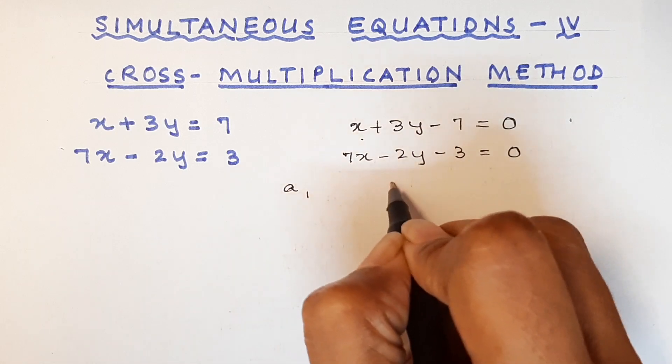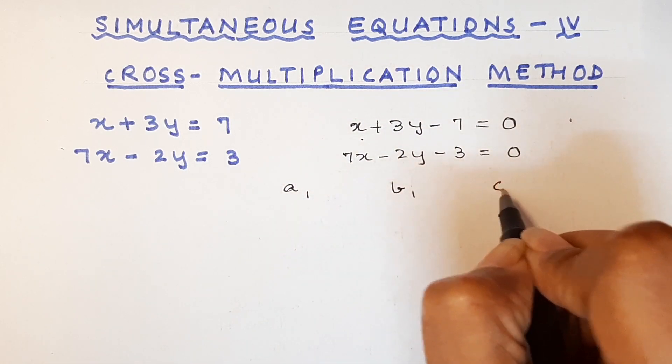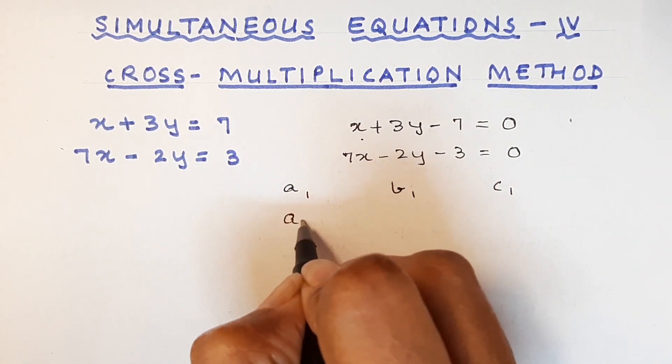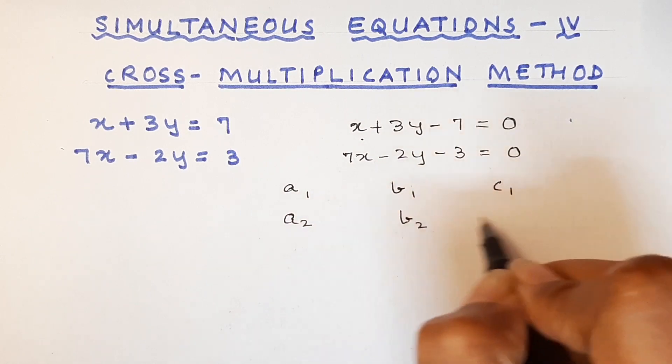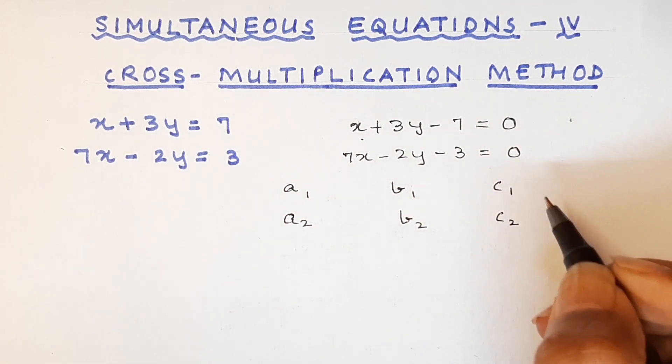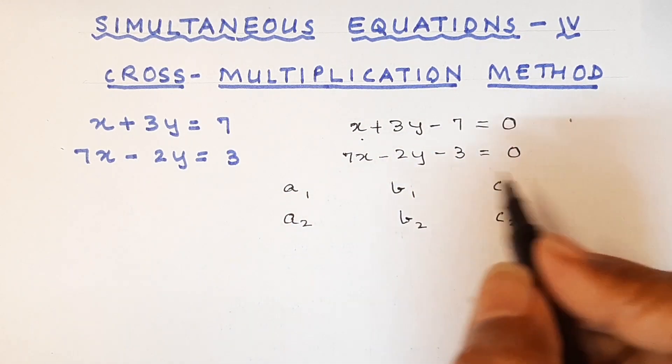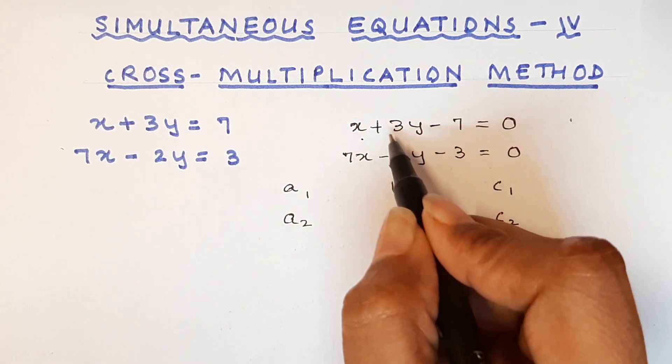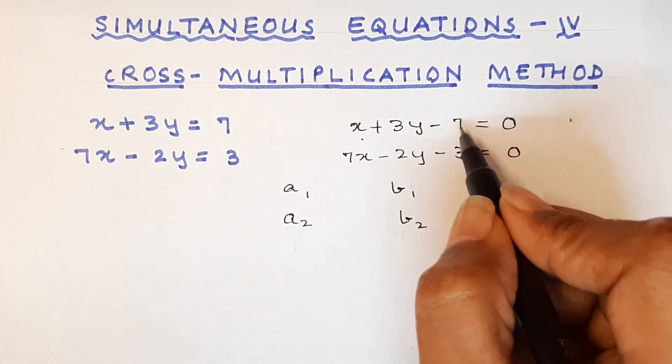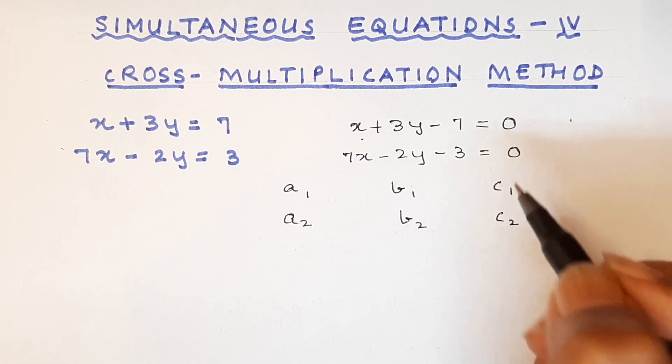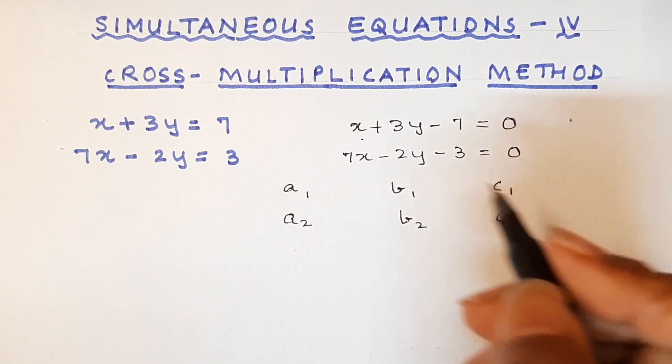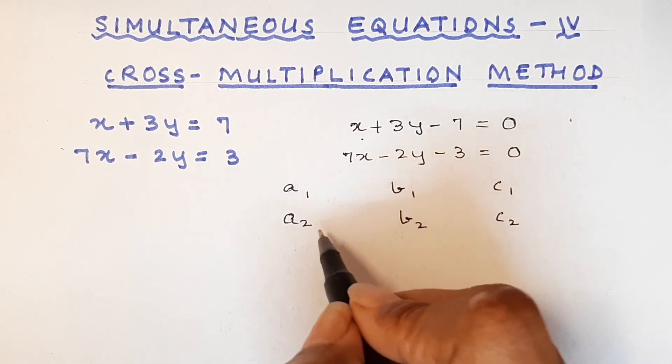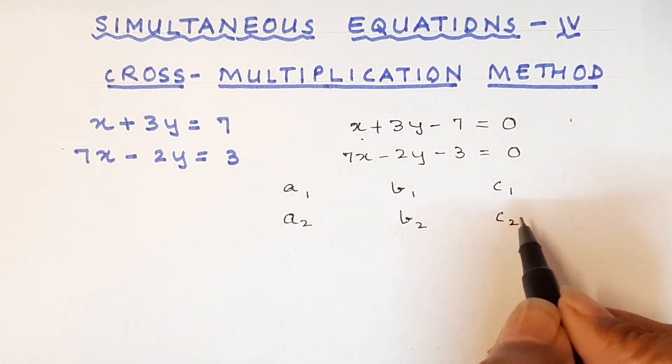Now what we have to do is write the values of a1, b1 and c1, a2, b2 and c2. What are a, b and c? a is the coefficient of x, b is the coefficient of y and c is the constant term. So for the first equation it will be a1, b1, c1. For the second equation it will be a2, b2, c2.